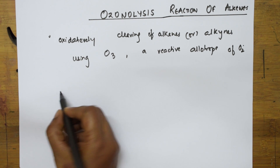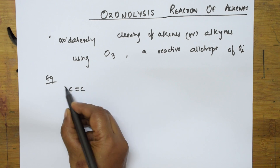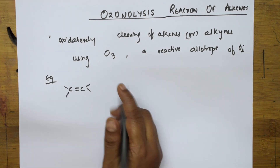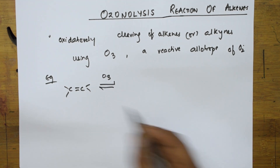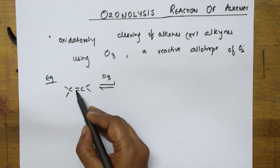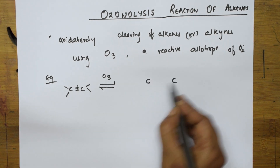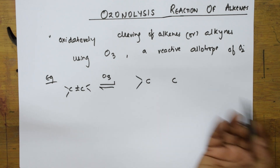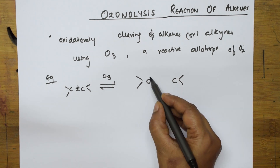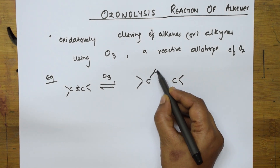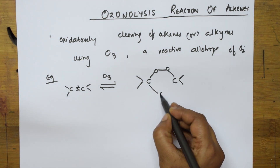How does ozonolysis occur? Let me take an example. Suppose I have an alkene — C=C. I am going to add ozone, O3, to this. There is a cleavage of the pi bond here. The oxygen molecule attaches around the double bond — one oxygen here, one more oxygen here, and one more oxygen, so three oxygens total.